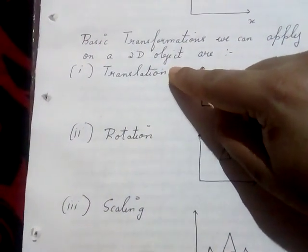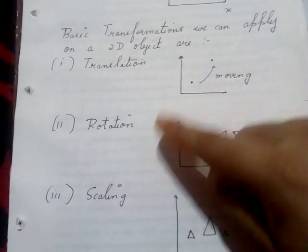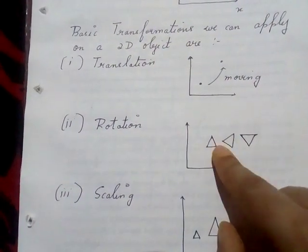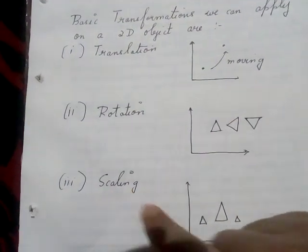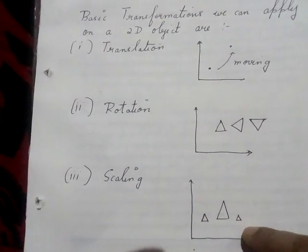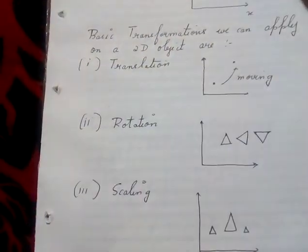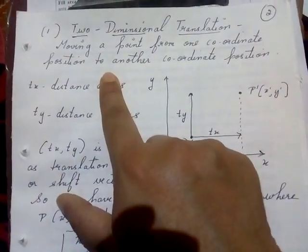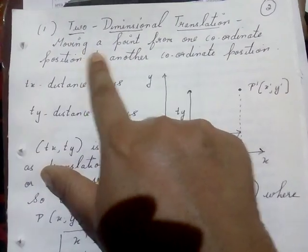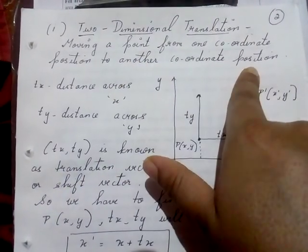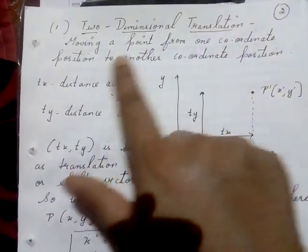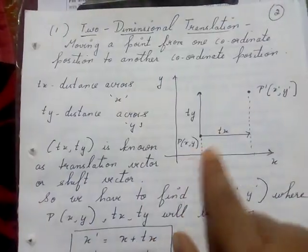So there are three transformations: translation means changing position from one point to another; rotation means rotating the object by some angle theta; and scaling means increasing or decreasing the size of an object. Now let us look at two-dimensional translation. The definition: moving a point from one coordinate position to another coordinate position is known as translation.